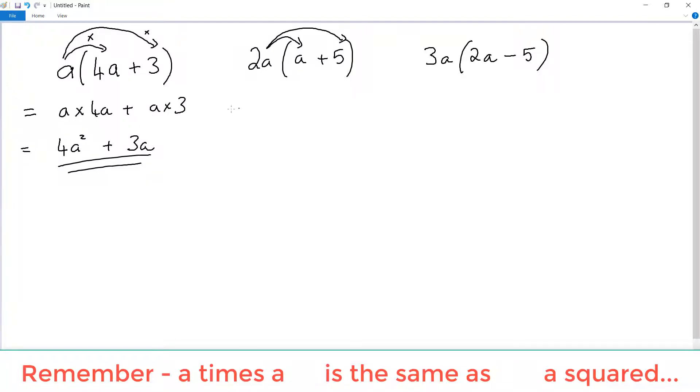Let's try the second one. Multiplying the 2a in. So we start with 2a times a and the 2a times 5. Simplifying it out we have 2a squared because a times a is the same as a squared and 10a. That's our answer.